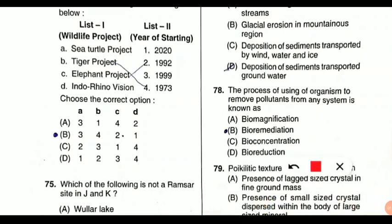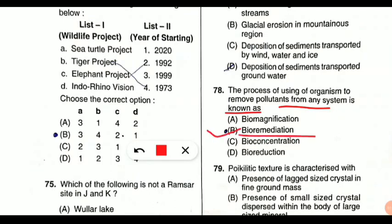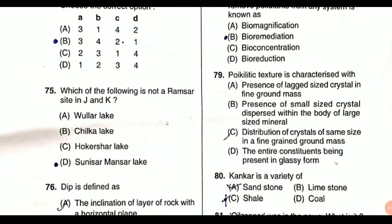Question number 78: the process of using organisms to remove pollutants from any system is known as what. This is a very easy question. The answer is option B — bioremediation. Bioremediation is the technique in which living organisms are used to remove pollutants or to decrease the level of pollutants from any system.